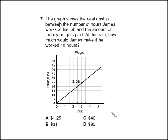Let's take a look at one more here. They have a fancy graph here. The graph shows the relationship between the number of hours James works at his job and the amount of money he gets paid. At this rate, how much would James make in 10 hours? So we're looking for how much would James make in 10 hours. But it tells you right here for three hours he earns $24.